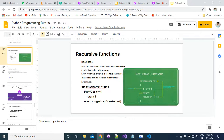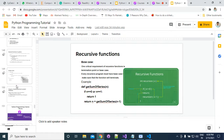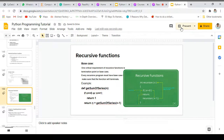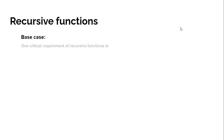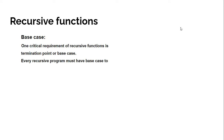Before going to the project, we have recursive functions remaining. A recursive function is a function that calls itself. One very important requirement is the base case - the termination point of the function. Every recursive function must have a base case. Without it, the function will call itself infinitely, creating an infinite loop. To avoid the infinite loop, we use the base case to stop the recursion at a defined point.